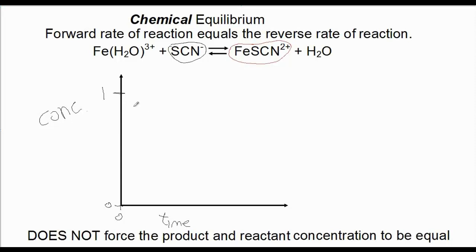So if we start off with thiocyanate at the beginning of the reaction at one molar, as time goes on the thiocyanate is going to decrease. Concentration of thiocyanate decreases until equilibrium is reached. And once equilibrium is reached, the concentration of the thiocyanate remains constant.